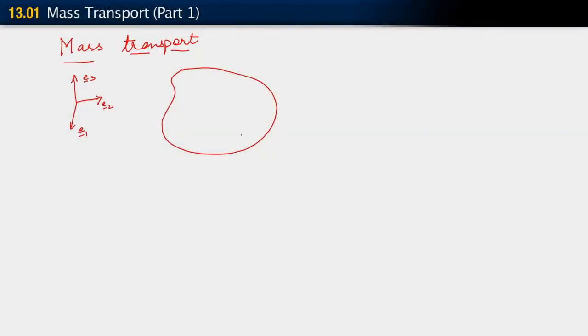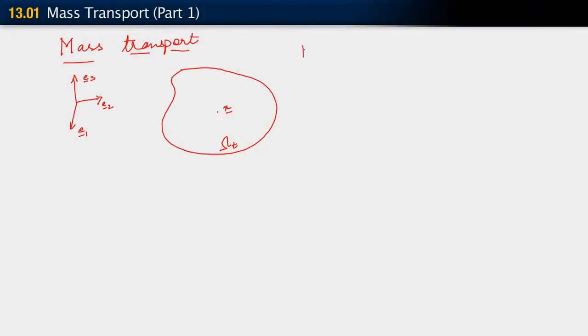So let's go ahead and put that down. We have our configuration, which we've decided to call omega sub t. We are not going to distinguish between reference and current position, but let's just use the notation for current position: x. This is the setting. And now we're talking of some substance with mass, and we want to look at how this substance is transported through the body.